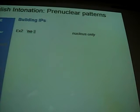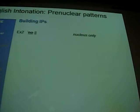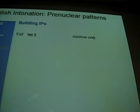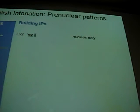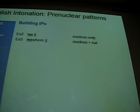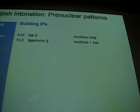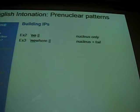In example two you have just a nucleus — nothing else. For example: 'No.' That's a high fall nucleus with no pre-head, no head, no tail. Then example three adds a tail: 'Nowhere.' And these are patterns we practised yesterday. Now something new — we now have a head, because there are syllables before the nucleus: 'Going nowhere.' And now the whole thing — a pre-head plus head plus nucleus plus tail: 'I'm going nowhere.'